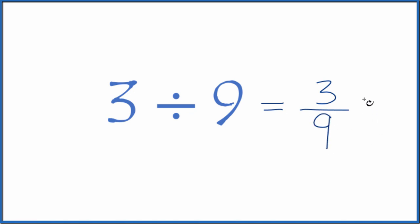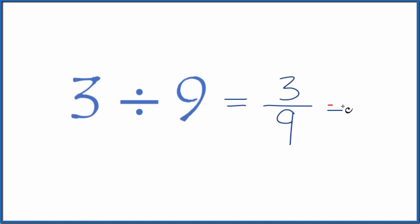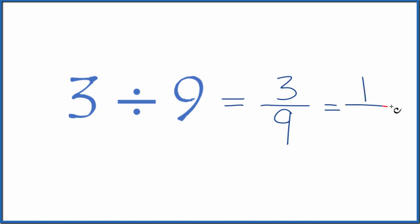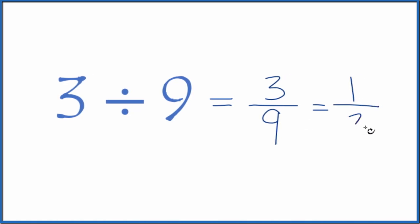And we can reduce this. 3 divided by 3 equals 1, and 9 divided by 3, that equals 3. So 3 ninths, we can simplify that to 1 third.